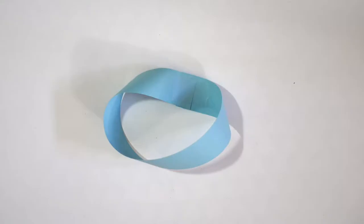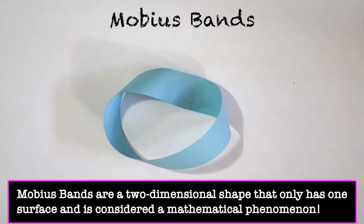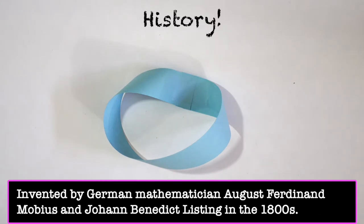Let's start off by explaining what a Mobius strip is. A Mobius strip is a two-dimensional shape that only has one surface and is considered a mathematical phenomenon in geometry. It was invented by German mathematician August Ferdinand Mobius and Johann Benedikt Listing in the 1800s.